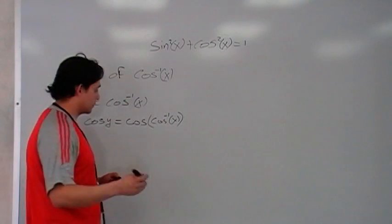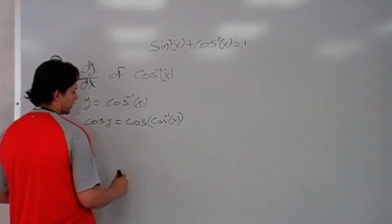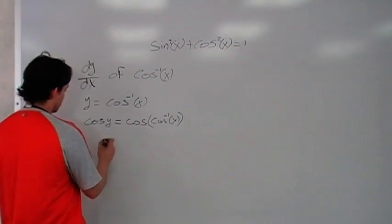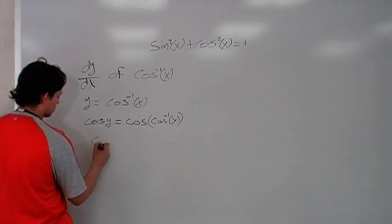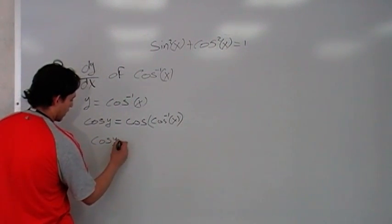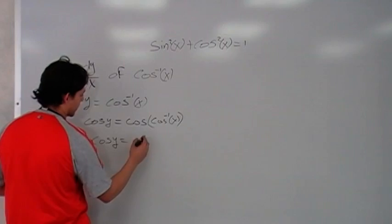Now, we know that these two right here, they cancel with each other, so we end up having cos of y equals just plain x.